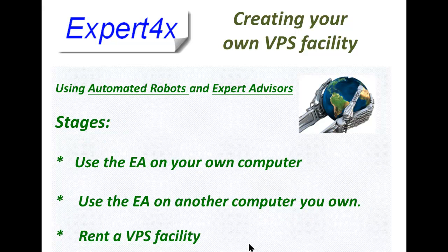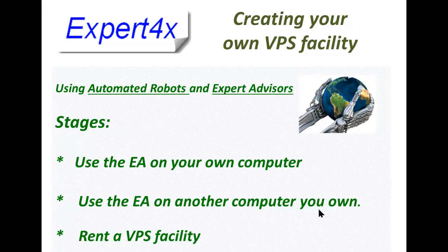With the advent of automatic robots and expert advisors, many Forex traders have gone through various phases in order to trade expert advisors. The first stage is to use the expert advisor on your own computer, keep your computer switched on and connected to the internet, and the expert advisor would trade, place, and close trades for you. The next phase is to use another computer that you own — an old laptop or desktop put in a corner — and load all your EAs and robots onto that one so it doesn't disrupt your existing computer.